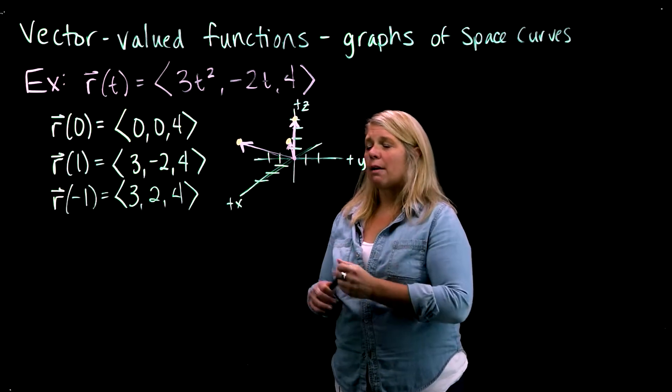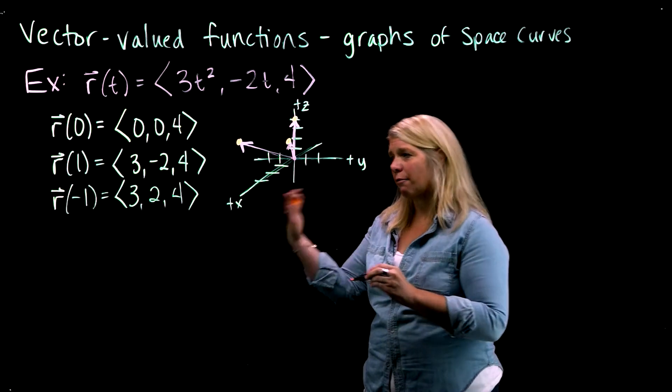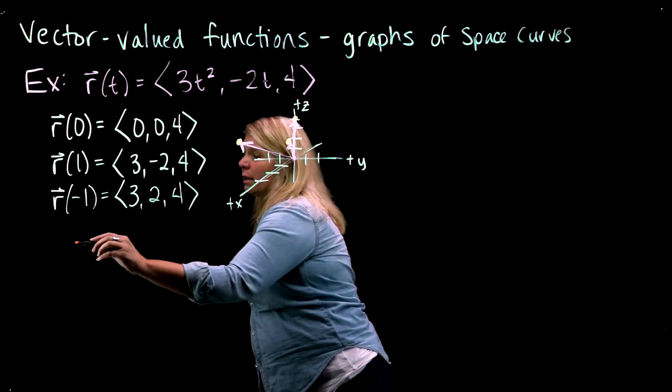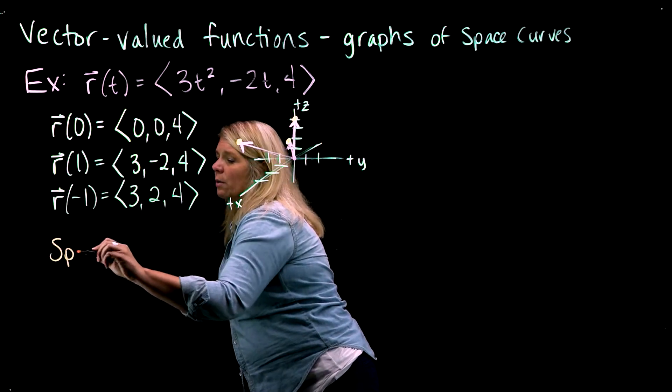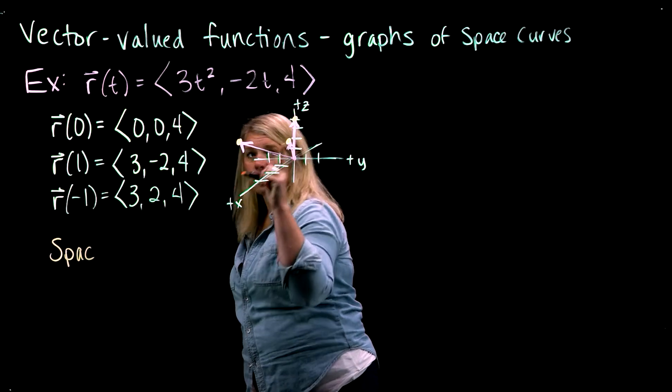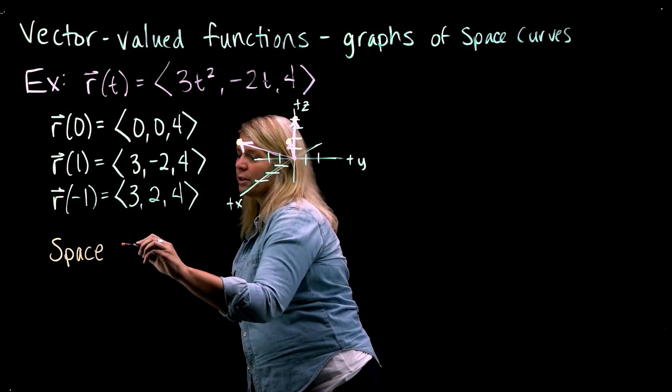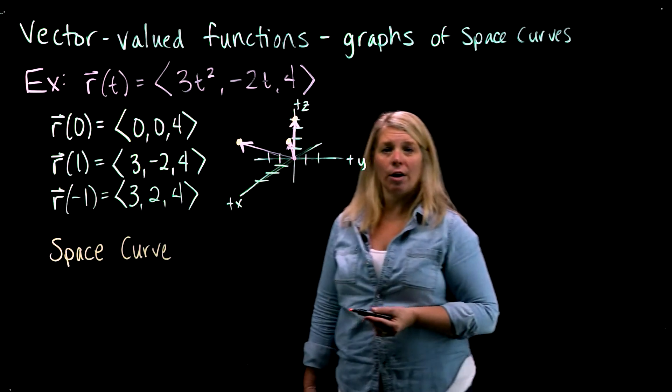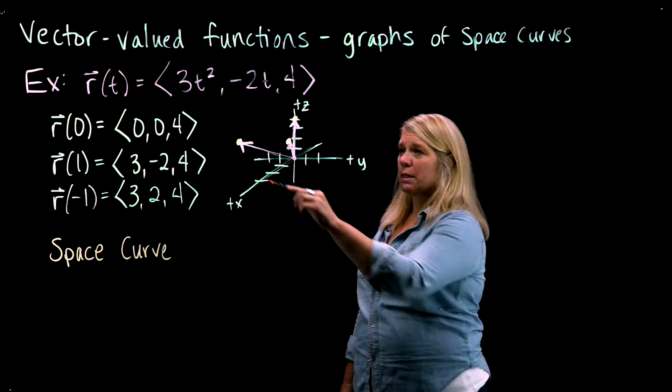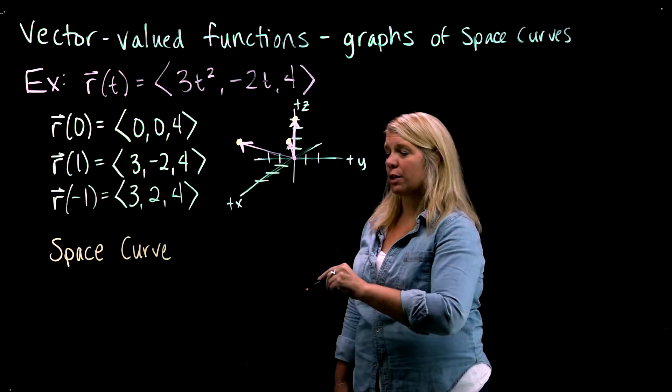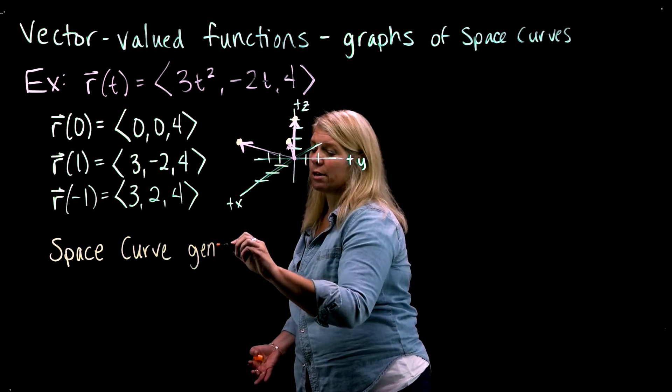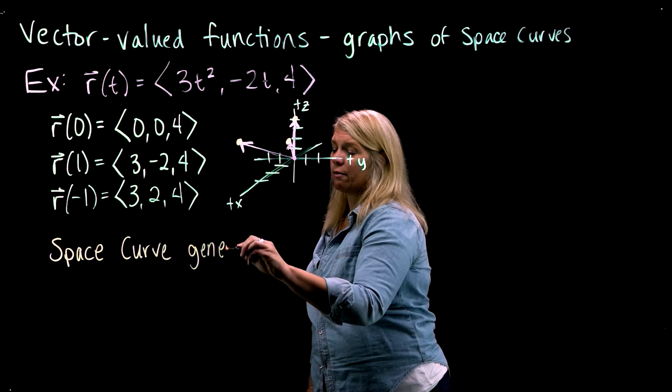And essentially what we're going to look at is just graphing those terminal points of all of those vectors. So when we think about a vector-valued function, if we graph the vectors all with their tail at the origin, and we graph just the terminal points of those vectors, we call that a space curve. We might call it a plane curve if we're in R2, but since we're in R3, we call it a space curve. We would call that a space curve generated by or associated with this vector-valued function.